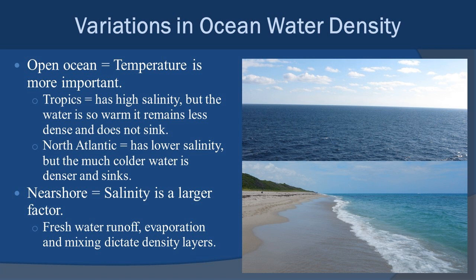Near shore, salinity tends to be a bigger factor in terms of density and layering of water. Fresh water runoff and evaporation have a much larger effect in near-shore communities with less water volume. This is especially true in estuaries and bay areas. If you've been swimming at the beach and dived down and hit a very cold or warm pocket of water, those water masses are characteristics of various densities defined by salinity and temperature.